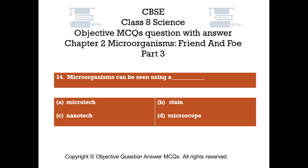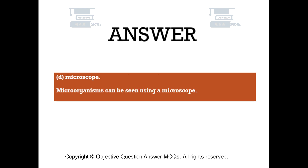Question number 14. Microorganisms can be seen using a. Option A: Microtech. Option B: Stain. Option C: Nanotech. Option D: Microscope. The right answer is option D — Microscope. Microorganisms can be seen using a microscope.